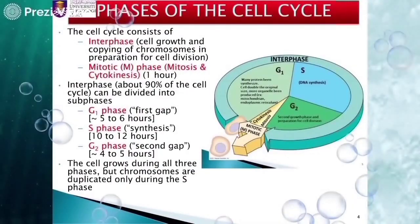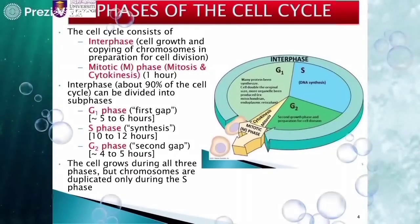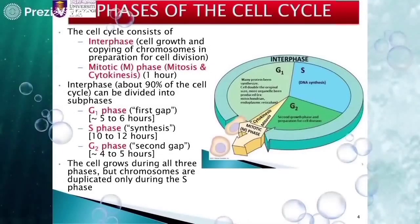Phases of the cell cycle. The cell cycle is a series of events that take place in a cell in which the cell grows until it divides to produce daughter cells. The cell cycle consists of two phases: interphase and M phase. Interphase is classified into three subphases: G1 phase, S phase, and G2 phase.